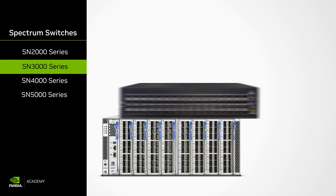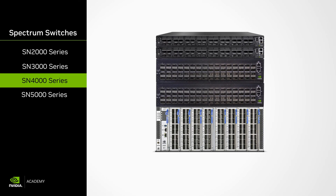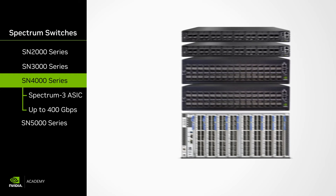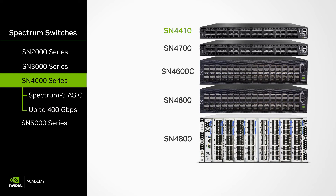The next series we'll be covering is the SN4000 series. These switches use Spectrum 3 ASICs and operate at rates of up to 400 Gigabits Ethernet. These switches include SN4410, SN4700, SN4600C, SN4600, and the SN4800.